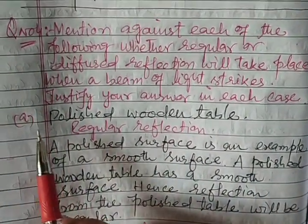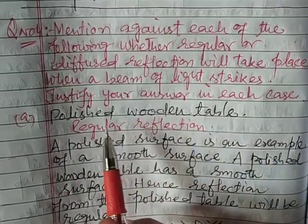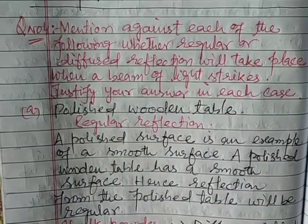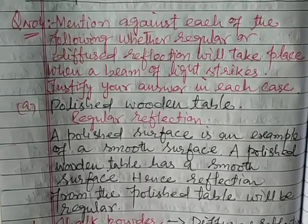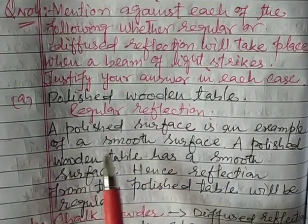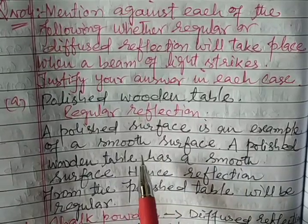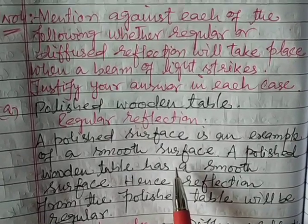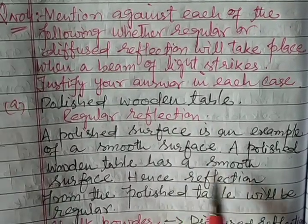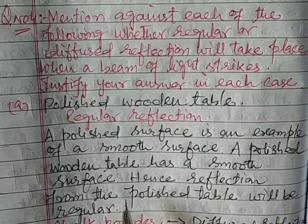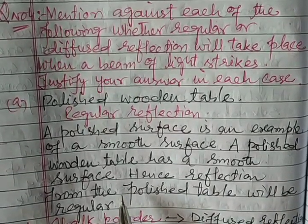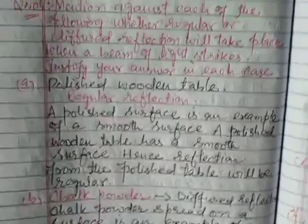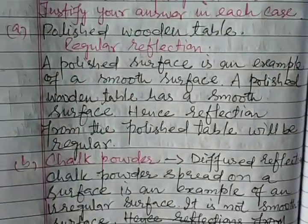Part A: Polished wooden table. A polished wooden table has a smooth surface. Because it is a polished and smooth surface, regular reflection will take place from a polished wooden table.